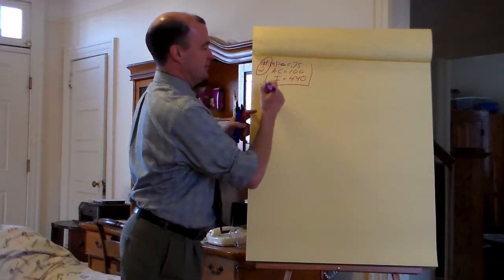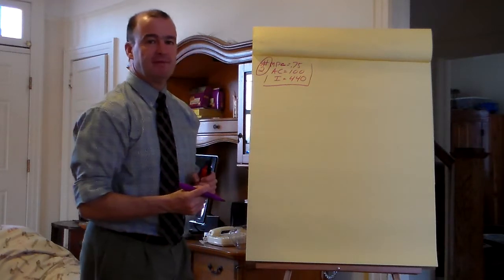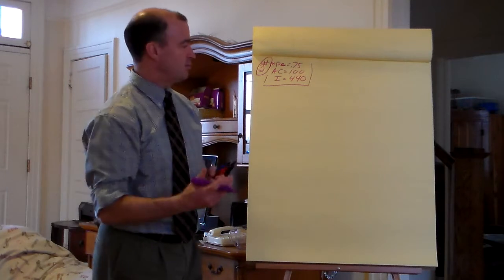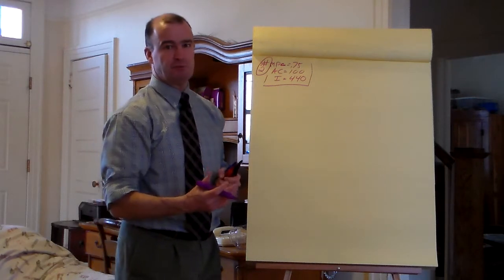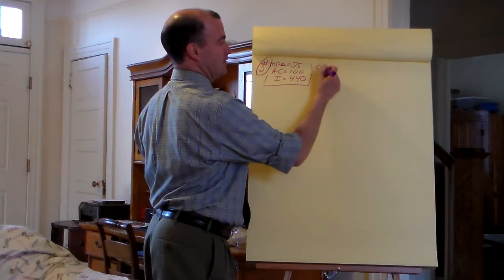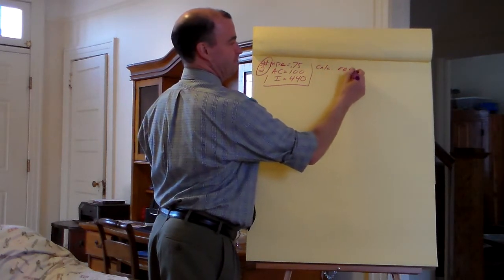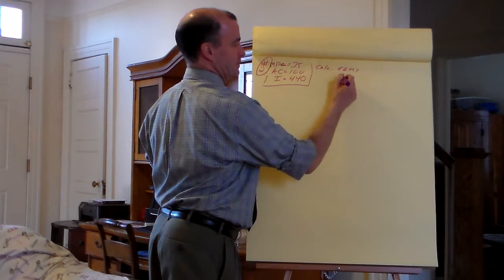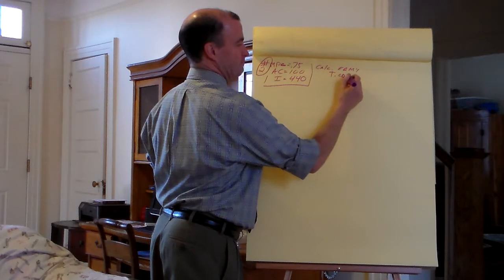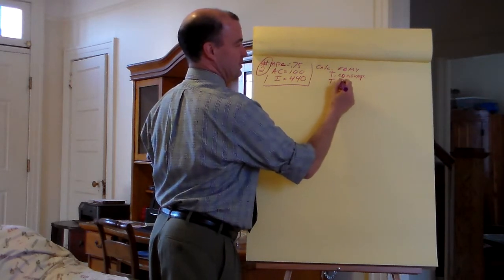Just with this information, figure out equilibrium income, figure out saving, and total consumption. Total consumption would be first, then the saving. The standard question: calculate equilibrium income, total consumption, and total saving.